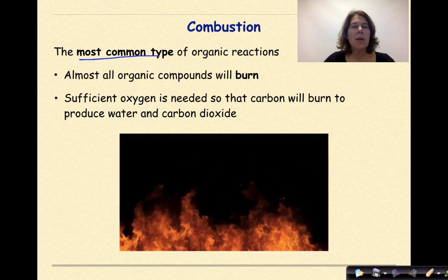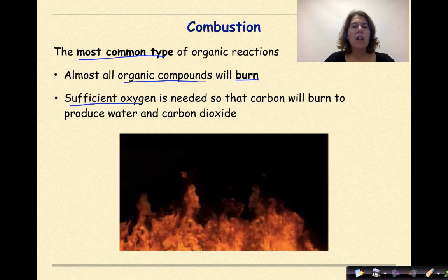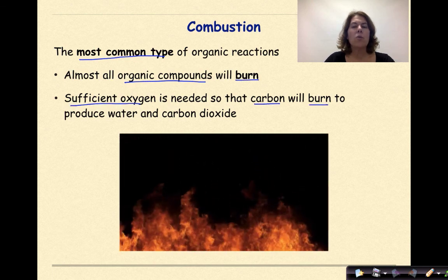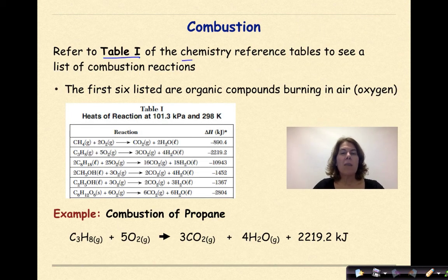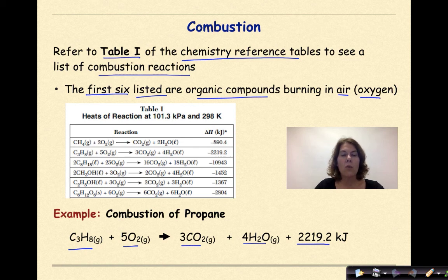Combustion is the most common type of organic reaction. Almost all organic compounds will burn, and we need sufficient oxygen so the carbon will burn to produce water and carbon dioxide. Refer to Table I of our chemistry reference tables to see a list of combustion reactions — the first six listed are organic compounds burning in air, which in this case is oxygen. Here's an example of the combustion of propane: propane plus oxygen gives us carbon dioxide and water, releasing 2,219.2 kilojoules of energy. The first six reactions on Table I are all combustion reactions.